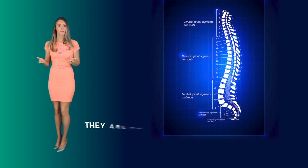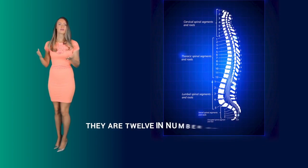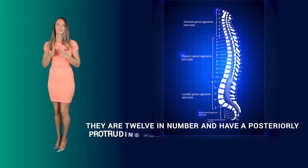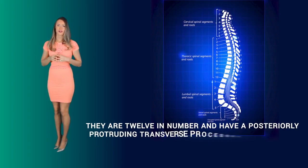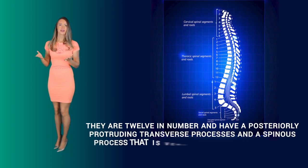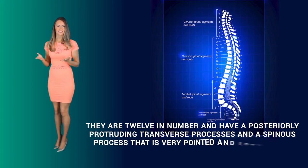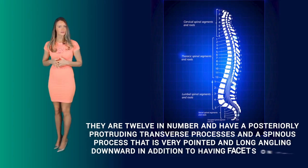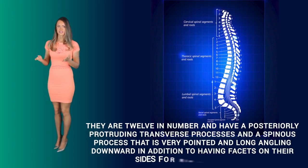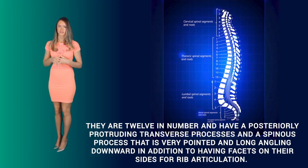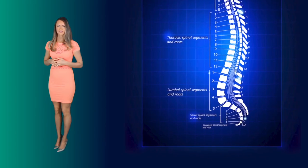There are 12 thoracic vertebrae and they have a posteriorly protruding transverse process. Each also has a spinous process that is very pointed and long, angling downwards, in addition to having facets on their sides for rib articulation.